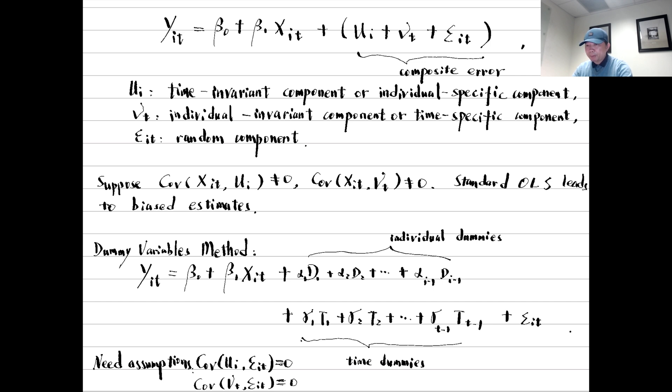To use the dummy-variables method, we need more assumptions. Since now the individual-fixed components and the time-fixed components are explicitly estimated as regressors, they should be uncorrelated with the random component, epsilon.